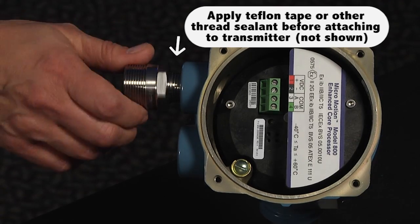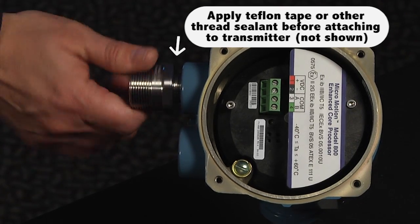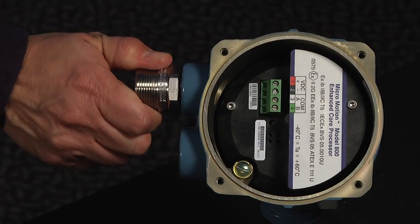The first thing to do is to screw the gland body into the conduit opening. You will want to tighten it to one turn past hand tight.